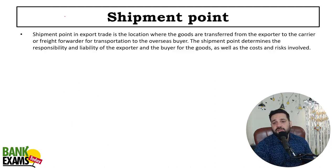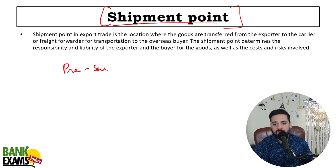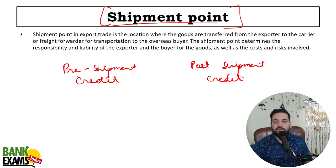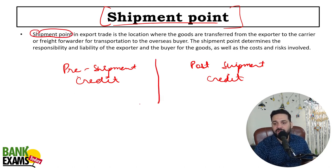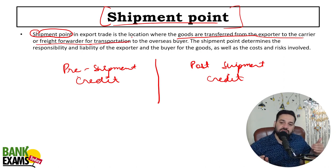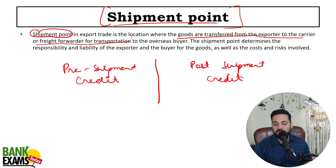To understand export finance you need to understand the shipment point. There is pre-shipment credit and post-shipment credit. The differentiating point is the shipment point — the location where goods are transferred from the exporter to the carrier or freight forwarder for transportation. Whatever loan is taken after that point is post-shipment; before that it is pre-shipment. Pre-shipment credit is generally taken for raw material and operational expenses.